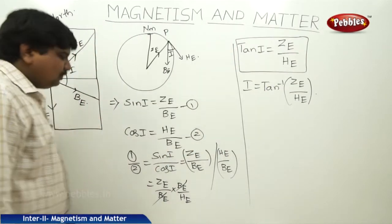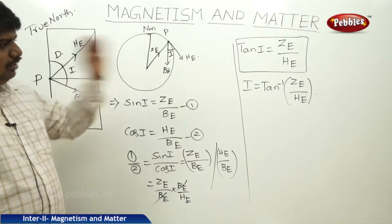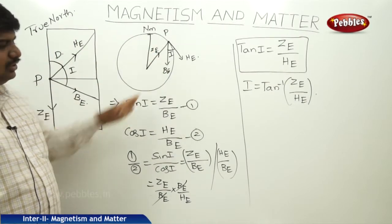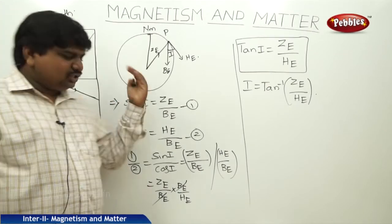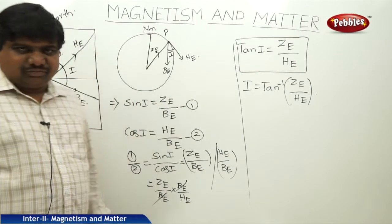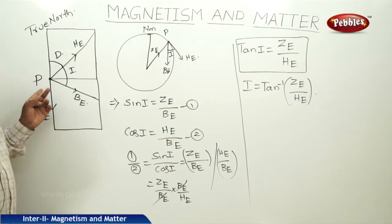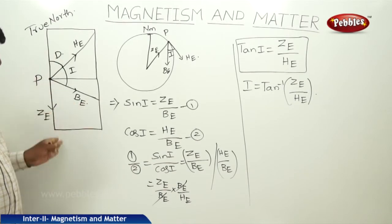So the angle of inclination I = tan⁻¹(ZE/HE). We have derived the angle of inclination with respect to Earth's magnetic meridian and geographic magnetic meridian. At point P, the magnetic field resolves into components HE, BE, and ZE.